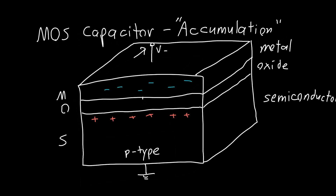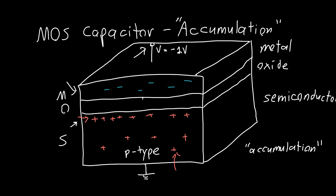If we apply a negative voltage — say V equals negative 1 volt — we'll get some electrons on the metal side and some holes on the positive side, and we call this mode of operation accumulation. The reason it's called accumulation is because we're taking the majority carriers out of the semiconductor and bringing them close to the interface. Near the interface, we are accumulating holes — the concentration of holes very near this edge is actually higher than in the bulk semiconductor.